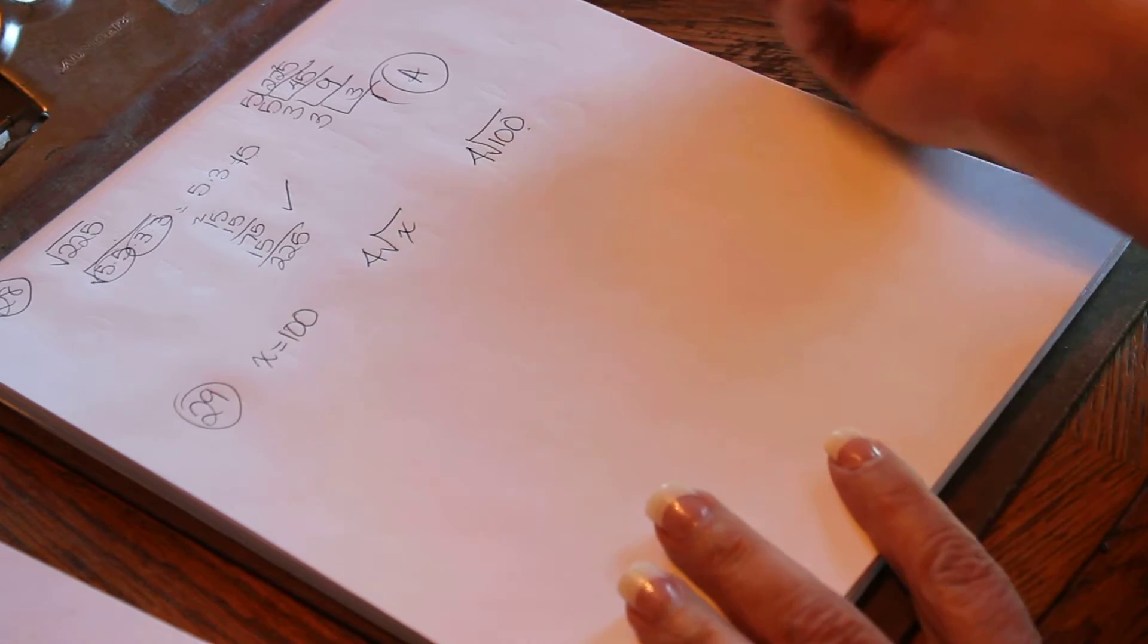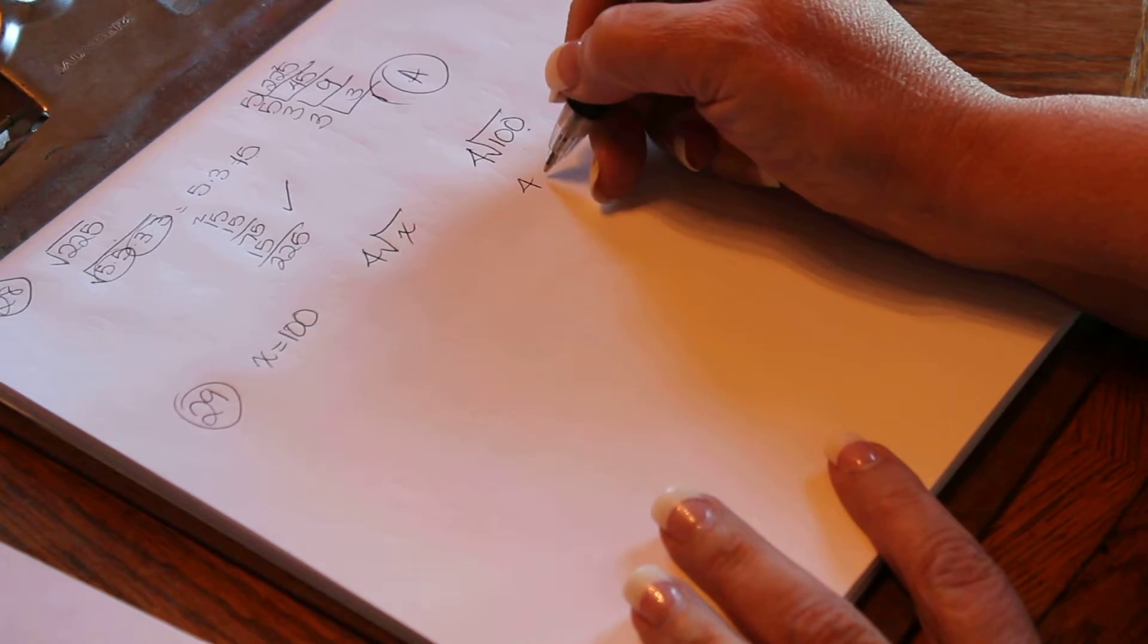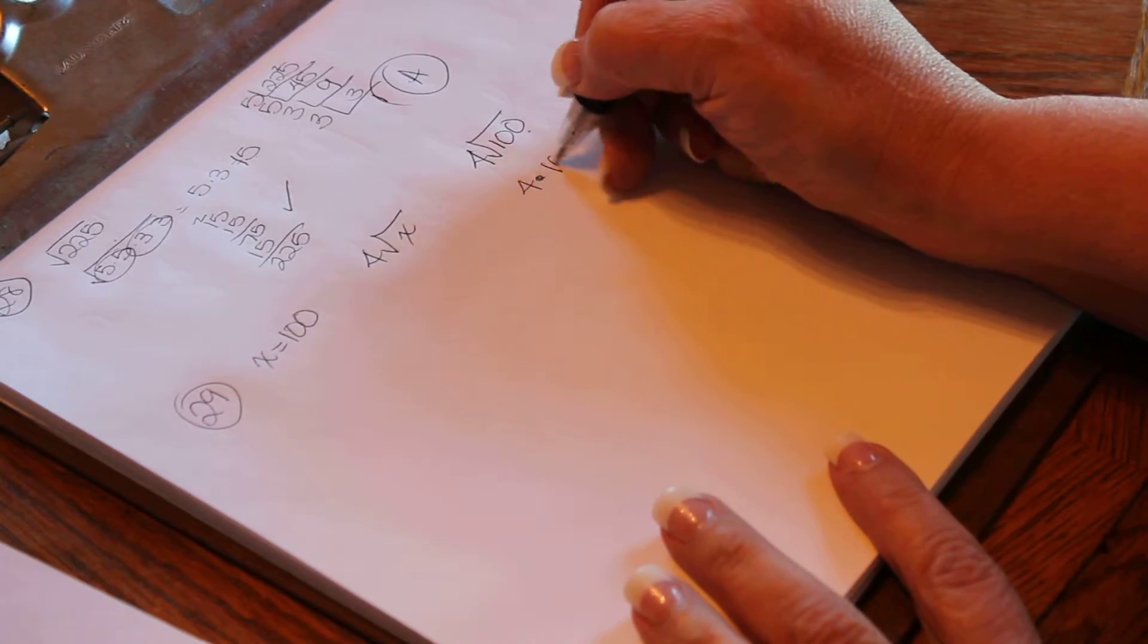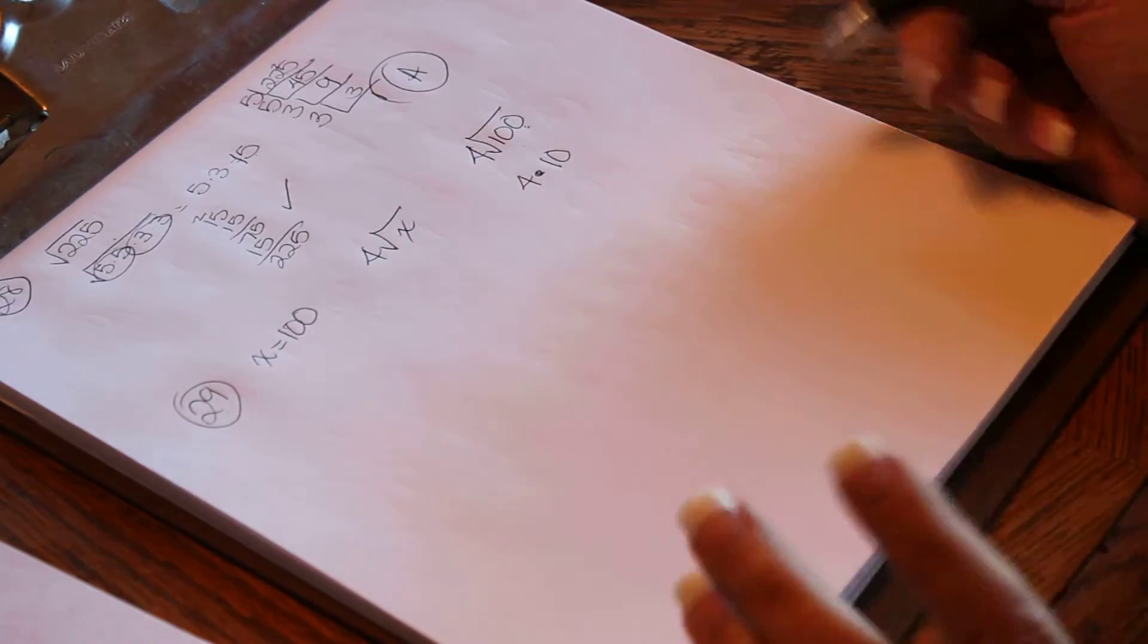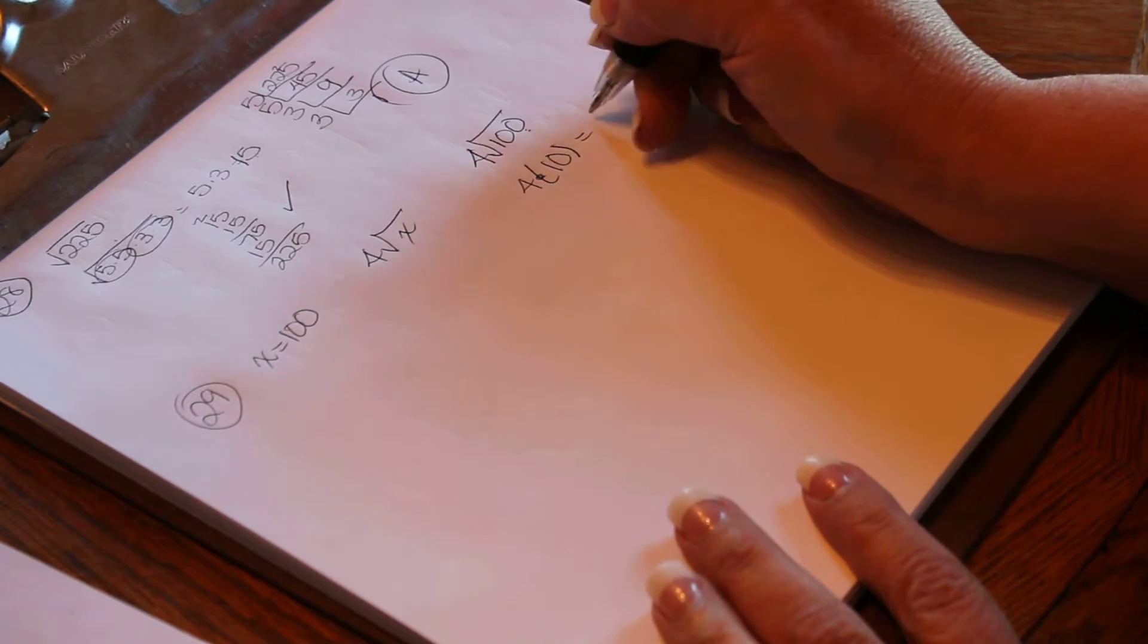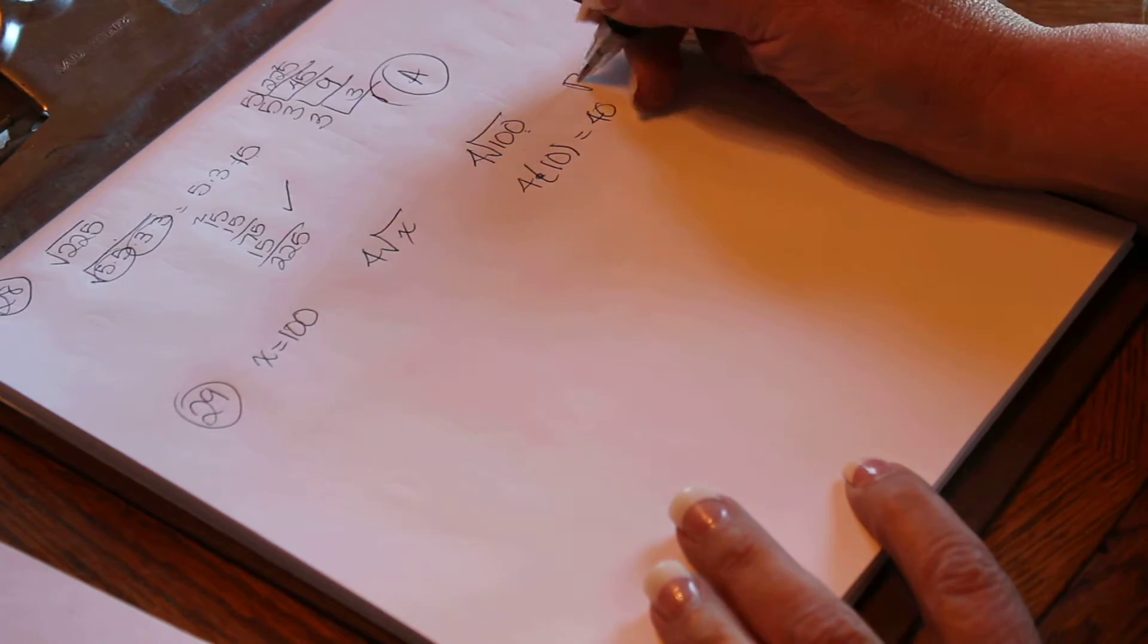What is the square root of 100? Well, that's 10. So 4 times 10. A square root is a grouping symbol. So the minute you solve it, you put it in parentheses. So 4 times 10 is 40, and the answer is B.